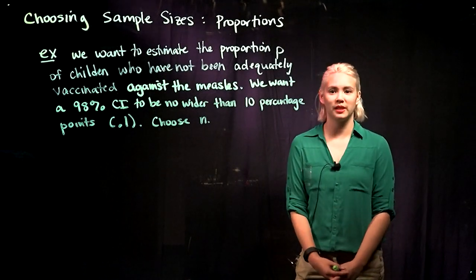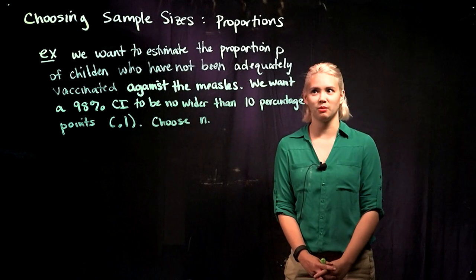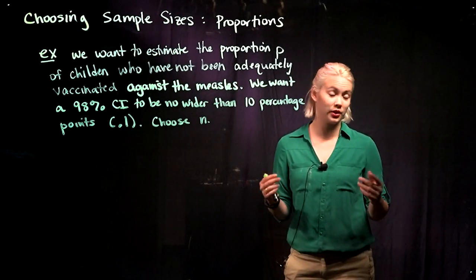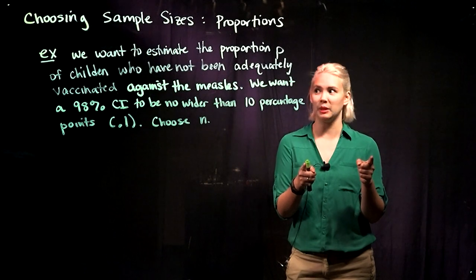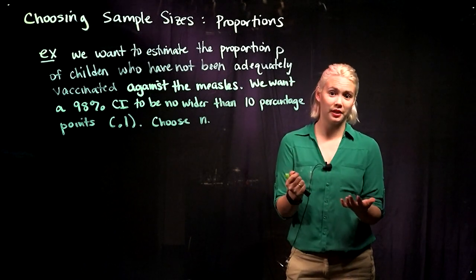We've been talking about choosing sample sizes for proportions so that we can have a confidence interval with some level of confidence that is no wider than 2D. Let's do an example of this to see how this works.